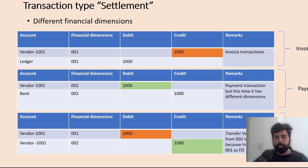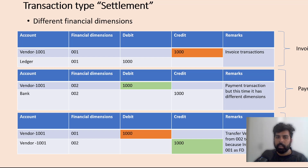Many times when we post any invoice and the payment settlement, the system sometimes generates an additional transaction on our vendor and customer transaction which is a type of settlement. We are going to explore two different scenarios where this specific transaction type gets generated, and in the rest of the scenarios it doesn't get generated. The idea is to give you a thought process for why this new settlement type of transaction gets generated when we post settlements for vendor invoices and payments.